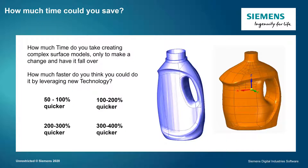So how much time could you save? If you're looking at creating complex surface models like the one on screen, you spend a lot of time — and then you make a small change and quite often the model falls over, requiring you to figure out which feature hasn't rebuilt properly. Using the subdivision modeling tool, how much faster could we make this? 50 to 100% faster? Over twice as fast, two to three times faster? 200 to 400% faster? Depending on the complexity of the model, it depends on how much quicker we'll go. Keep that in mind while watching this presentation — we'll come back to it at the end.